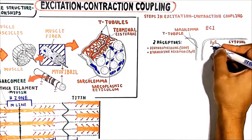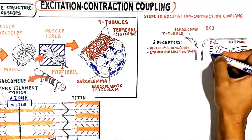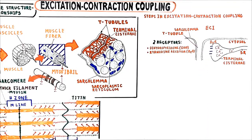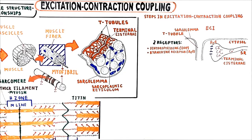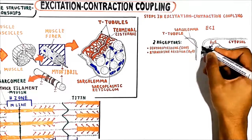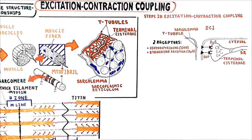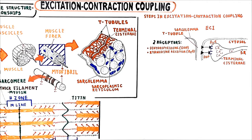The ryanodine receptor is located in the sarcoplasmic reticulum and functions as a calcium channel. When skeletal muscle is at rest, the ryanodine receptor is physically connected to and blocked by the dihydropyridine receptor located in the sarcolemmal membrane. Although it is a voltage-gated calcium channel, calcium does not flux through this receptor in skeletal muscle. Rather, the DHP receptor functions as a voltage sensor.